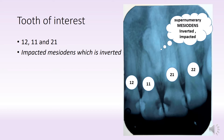Now this tooth is exactly in the midline of 1-1 and 2-1, and the supernumerary teeth which are seen in the midline are generally called as mesiodentes. And this particular mesiodents is actually impacted,